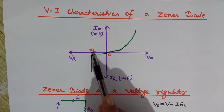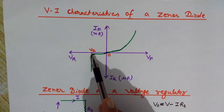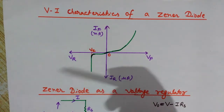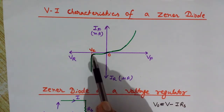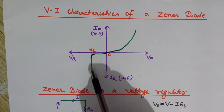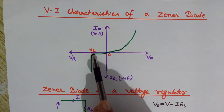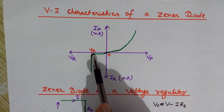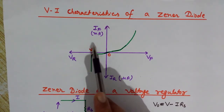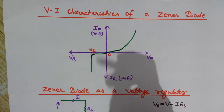At the zener voltage Vz, the diode suddenly breaks down and the current suddenly starts to increase. If we further increase the reverse voltage, the voltage does not increase further — it remains constant at Vz — while the current keeps increasing. We can use the zener diode as a voltage regulator because of this property.